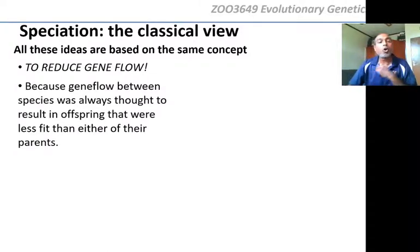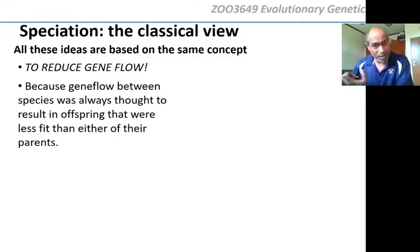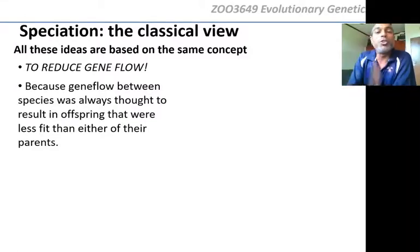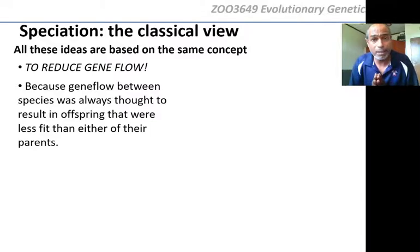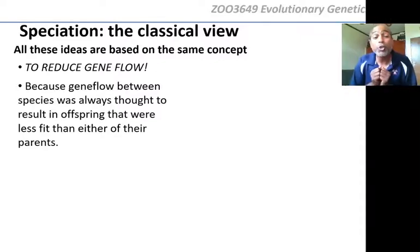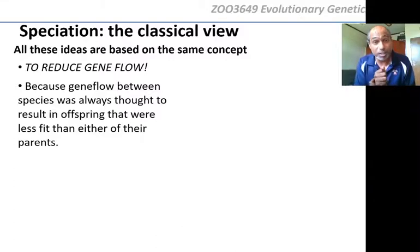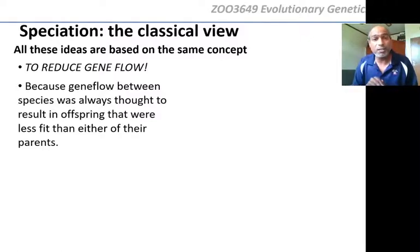The defining feature of the classical view is to reduce gene flow. If you can reduce gene flow, you will get species. That is what Ernst Mayr and Theodosius Dobzhansky said — the Mayerian view of speciation: to get species, you must get rid of gene flow, because gene flow will make populations the same. Speciation means they're becoming different, so you can't have gene flow.